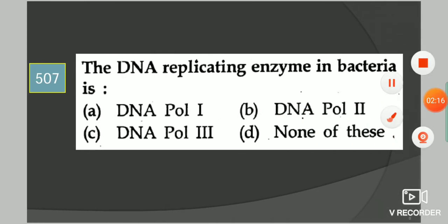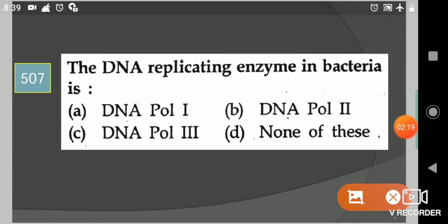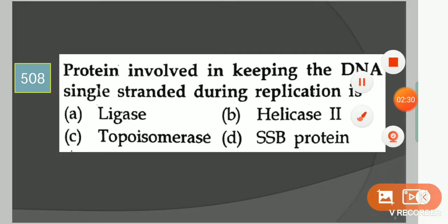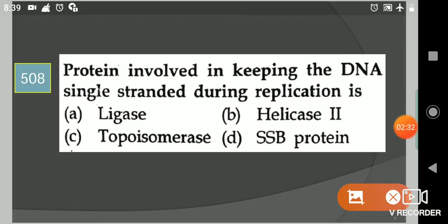Next question: The DNA replicating enzyme in bacteria is? Your options are DNA Pol I, DNA Pol II, DNA Pol III, none of these. Your answer is option C, DNA Pol III.